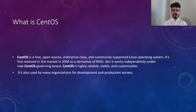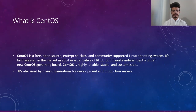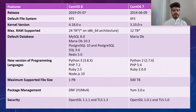There are other operating systems that also work on Linux, such as Fedora, Ubuntu, SUSE Linux, and of course CentOS. CentOS is used by many organizations for development and production of servers. Now let's look at the main differences between CentOS 8 and CentOS 7.